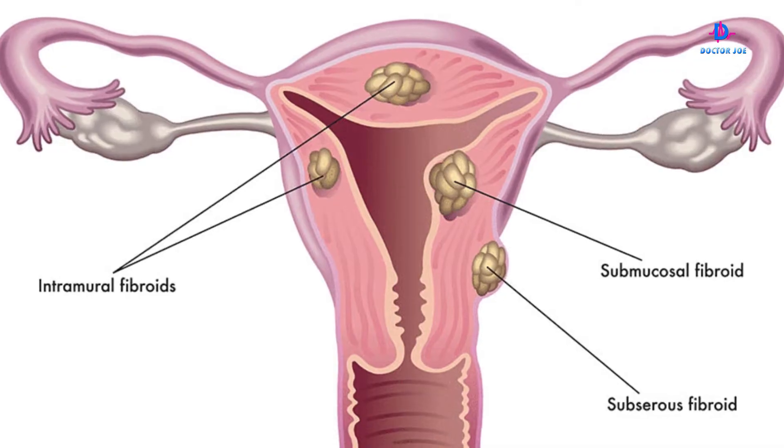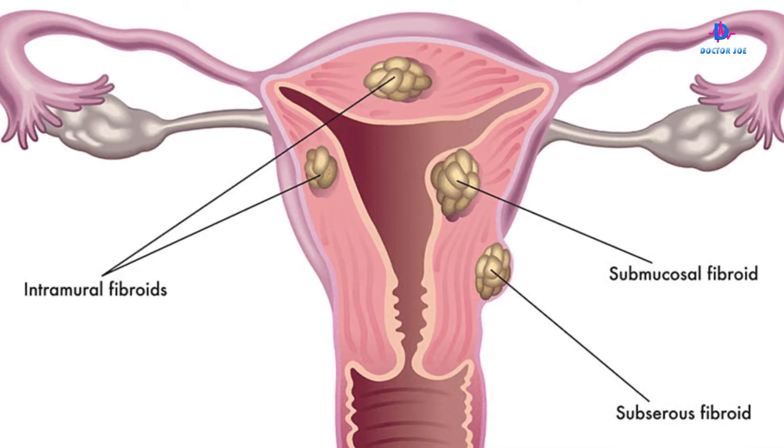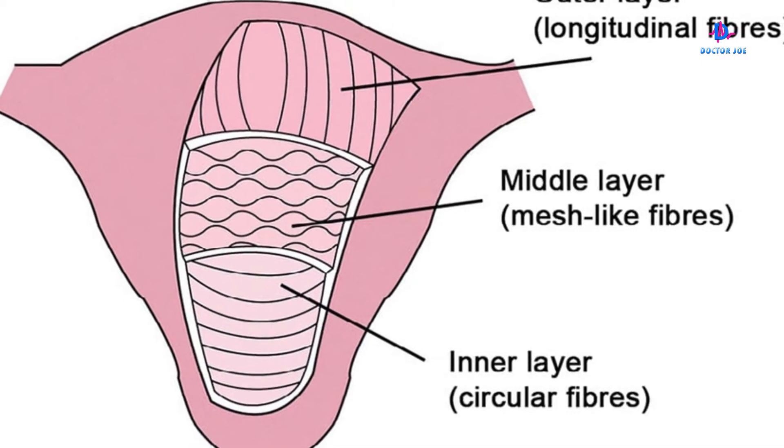Uterine fibroids are usually growths or swellings that are found in the woman's uterus — in other words, the woman's womb. These swellings or growths are found in different varieties. The uterus is made of different layers, and we have the middle layer, which is mostly a muscular layer. It's from these layers that the uterine fibroid or these masses will develop. They come in different sizes and different numbers.